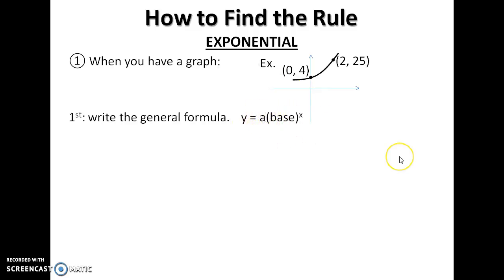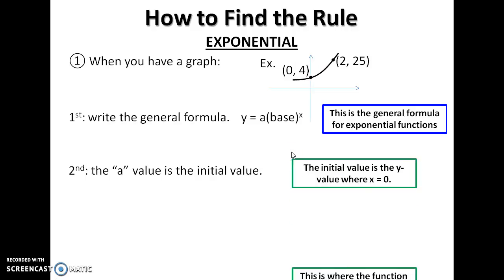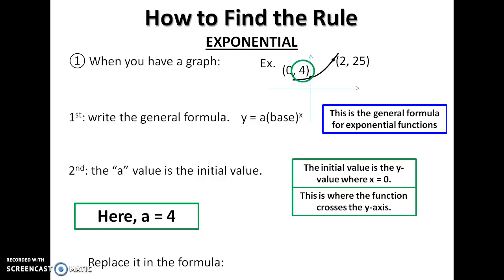The a in the exponential function is the initial value. So that means the point where the curve passes through the y-axis. In this case, the actual initial value is 4. So we can replace that as the a value in the general rule. 4 base to the x.